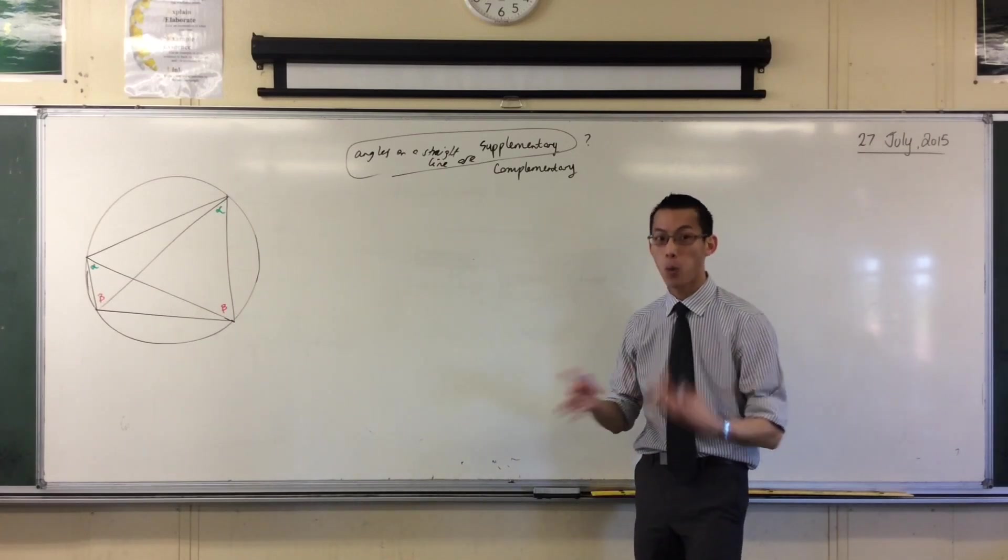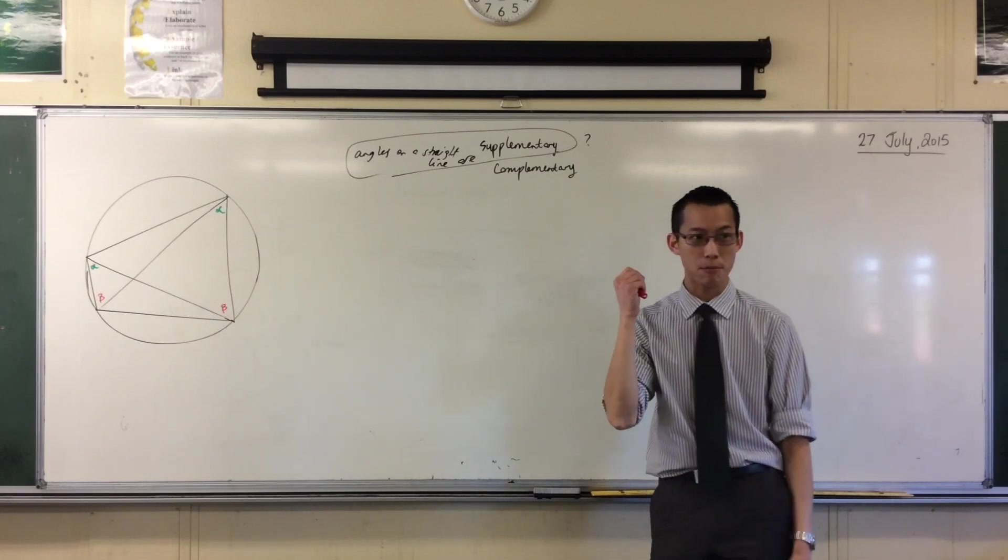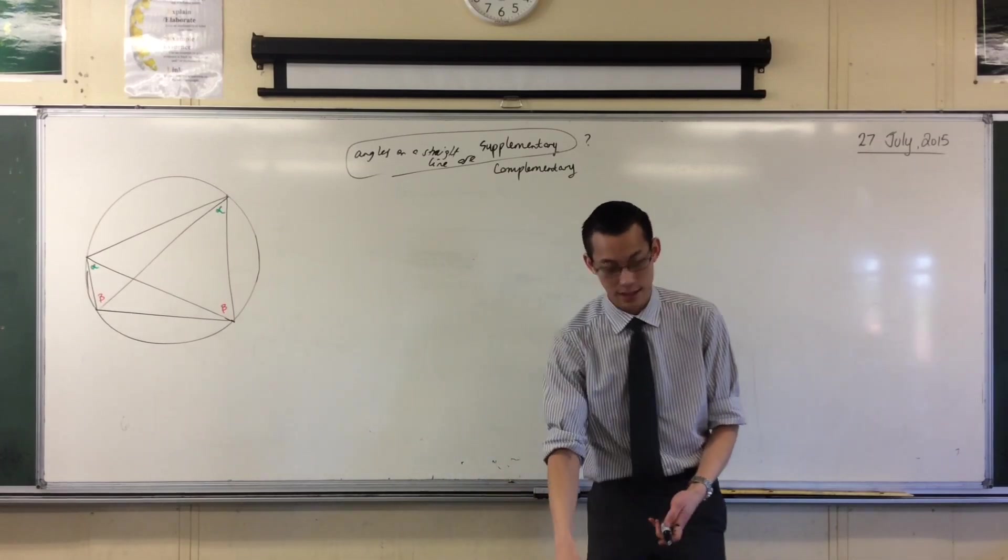Okay, now beta is a cyclic quadrilateral. It's made of four chords, which means it divides off, it separates out four arcs of the circle. So therefore you have four pairs. I can keep on doing this.